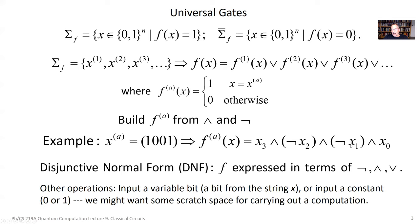That AND is going to be satisfied only if x3 equals 1, NOT x2 equals 1, NOT x1 equals 1, and x0 equals 1 — in other words, only if the input string is 1, 0, 0, 1. For any other input, one of the variables is going to have the wrong value and the AND is going to be 0. So I've taken the characteristic function and expressed it in terms of AND and OR. For any boolean function, I've expressed it in terms of OR, AND, and NOT.